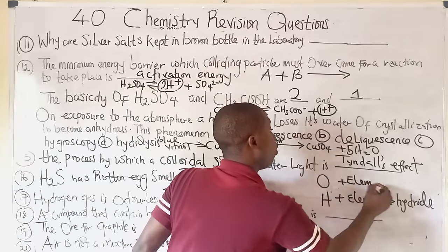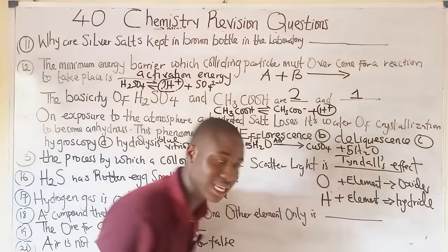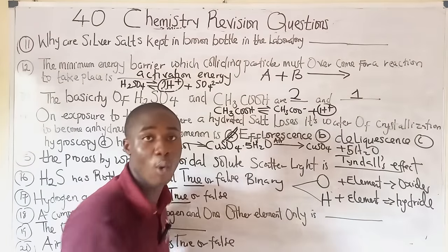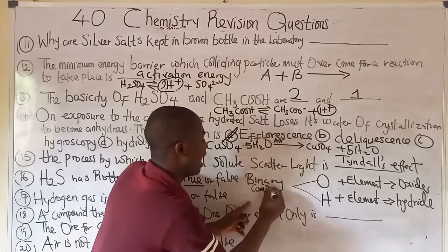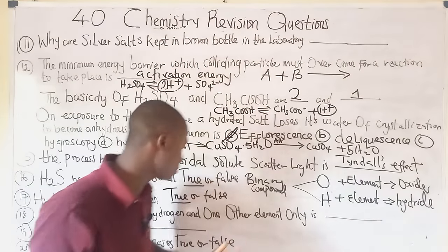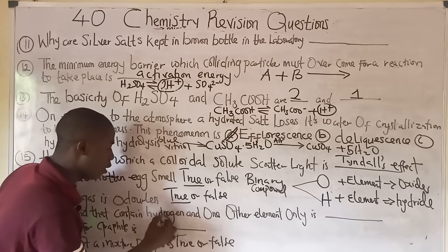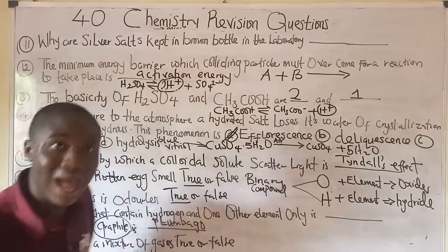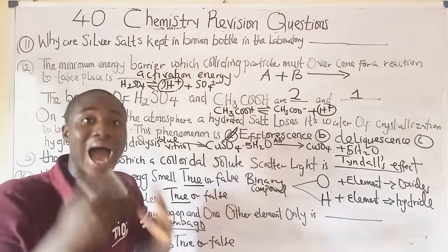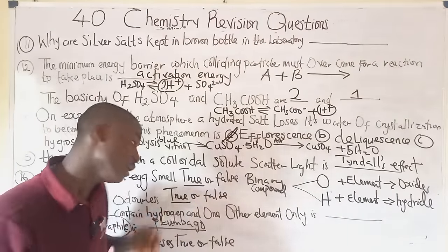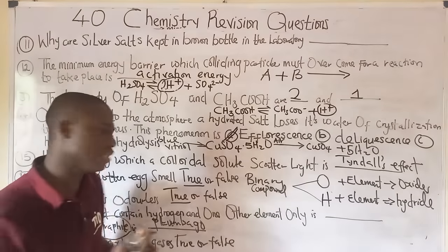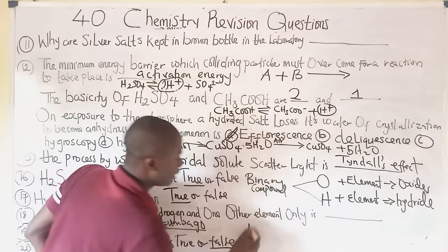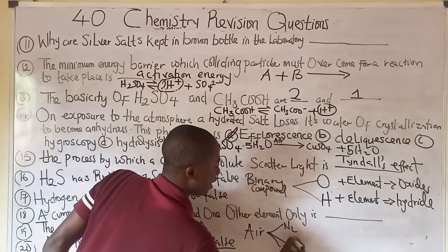Question nineteen: the oil for graphite is called plumbago. Graphite is a crystalline allotrope of carbon, alongside diamond. Question twenty: the statement 'air is not a mixture' is false. Air is a mixture of gases including nitrogen (78%), oxygen (21%), carbon dioxide (0.03%), water vapor, dust, and noble gases. Air is neither a compound nor an element.